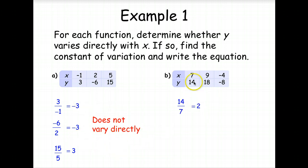14 over 7 gives us 2. 18 divided by 9 gives us 2. Negative 8 divided by negative 4 gives us 2. So K is equal to 2. So the equation that we can write Y is equal to KX is Y is equal to 2X. Very good.